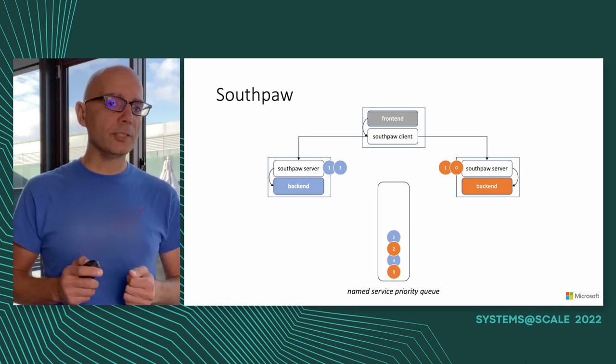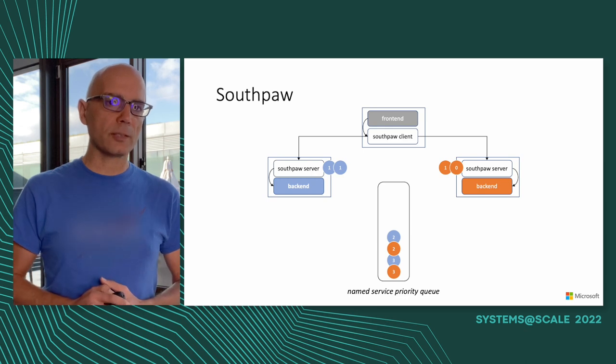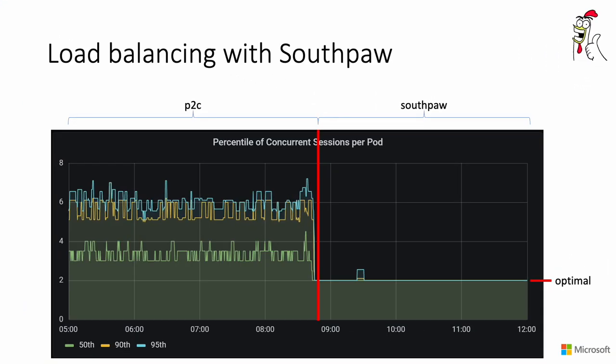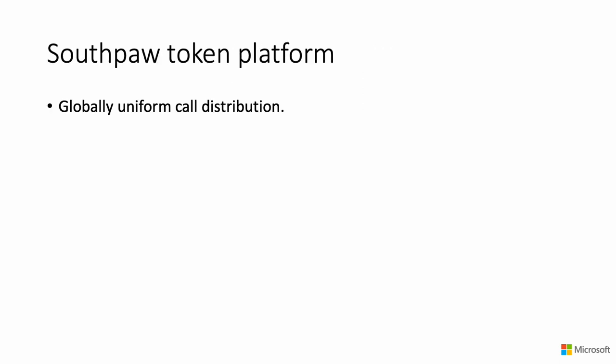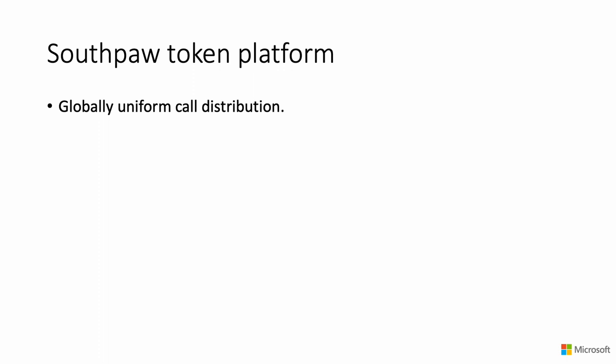Because priorities are assigned in inverse proportion to the number of concurrent requests on the pod, tokens are always popped in breadth-first order. This gives us a strong guarantee of uniform load balancing across the board. Comparing our earlier experiment results, the graph on the left shows distribution with power-of-two choices load balancing, and on the right with Southpaw — when we switched, all requests were optimally serviced with exactly two requests per pod, giving us extremely uniform load balancing.